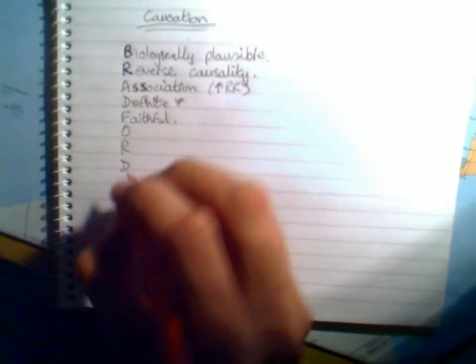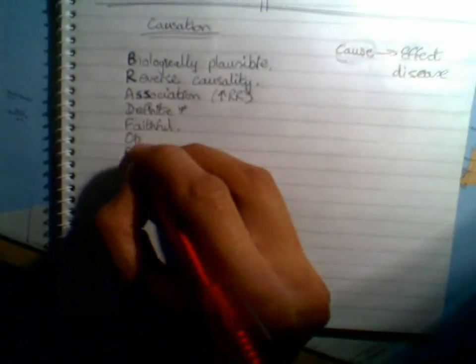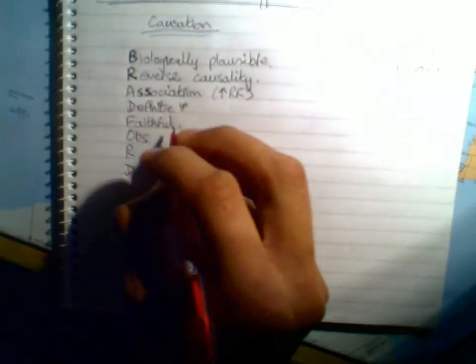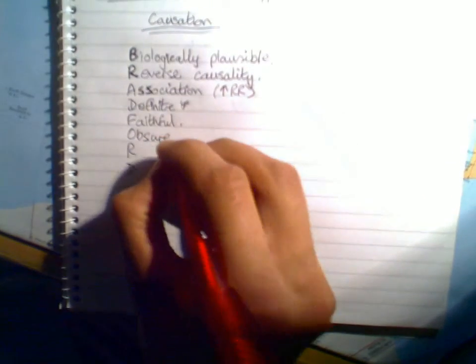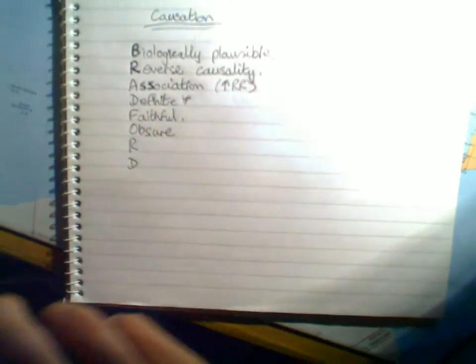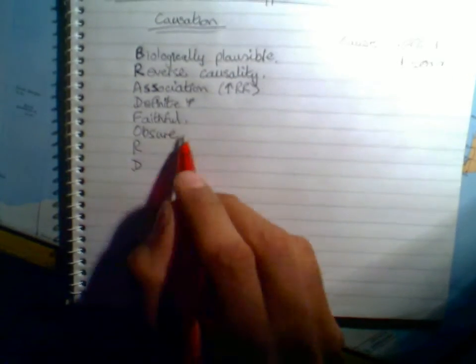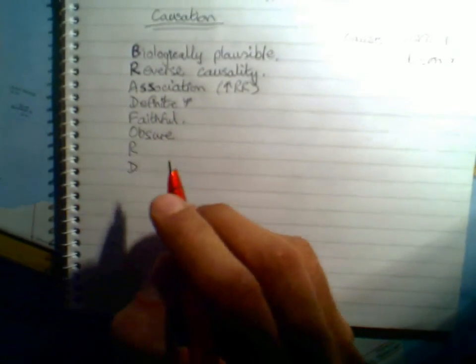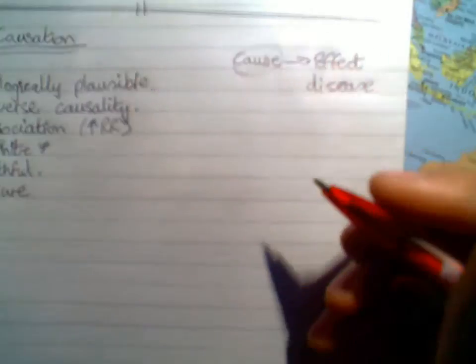F is for faithful — are our findings faithful to what has been found in other studies? Basically, consistency with other research. O is for obscure — is there anything else obscuring the results, muddying the water? Going back to our cause and effect, we might think something is the cause, but is there a confounder — another factor that is truly causing the disease that we haven't identified yet?